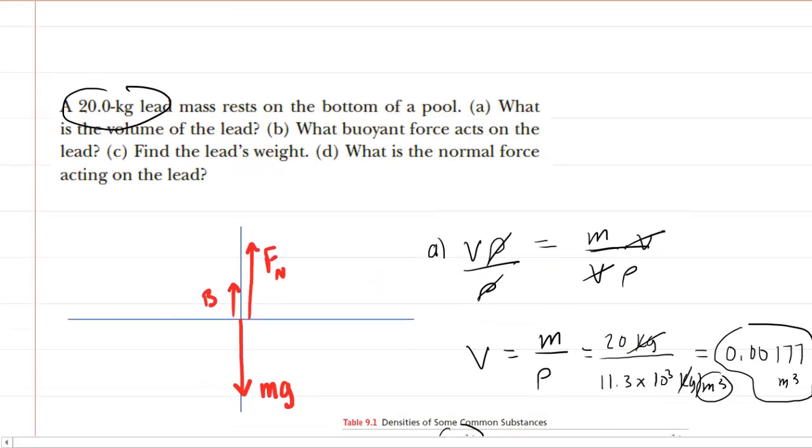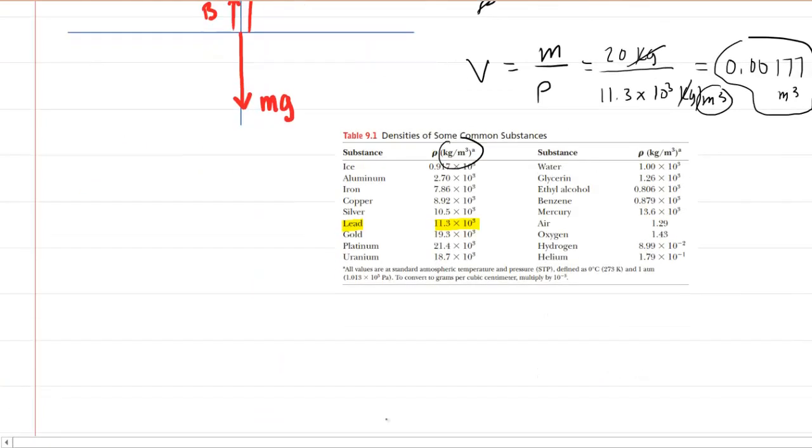To part B, we need to determine the buoyant force. And we have learned in this chapter that the buoyant force is the density of the fluid. In this case, that fluid is water, since the lead is at the bottom of a pool, multiplied by the volume of the object that is submerged, and then multiplied by g.